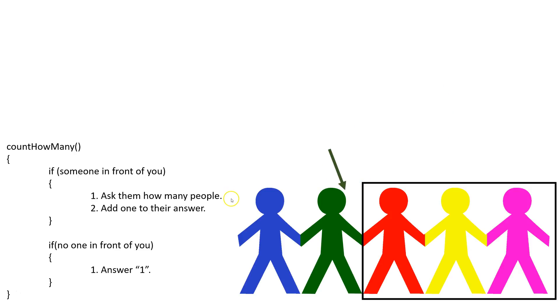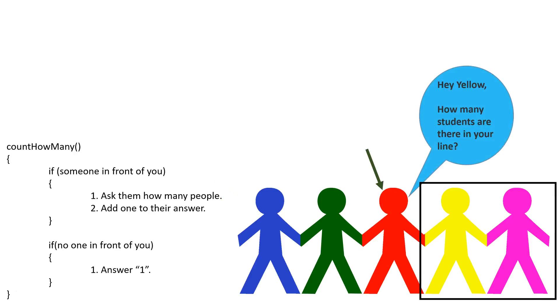Next, red checks his line, sees there is someone in front of him, and asks that person how many people are in your line.